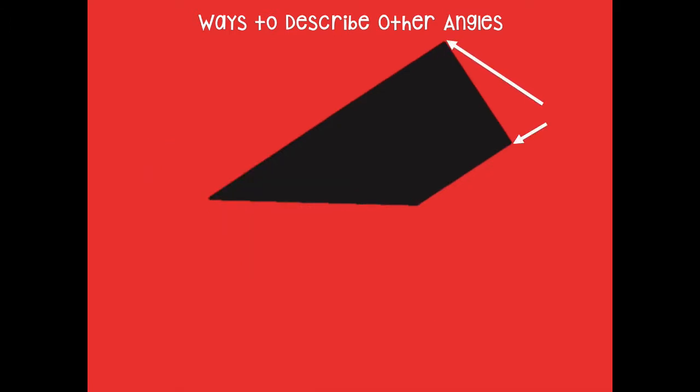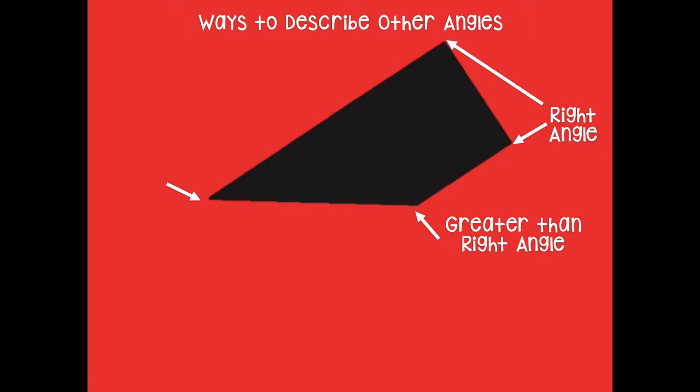Let's review. These two angles are right angles. This one is a greater-than-right angle. And this one is a less-than-right angle. Remember: use your index card as your right angle tool. If it follows the corner, it's a right angle. If it goes past the corner, it's a greater-than-right angle, also known as an obtuse angle. If it goes less than the corner of your index card, it is a less-than-right angle, also known as an acute angle.